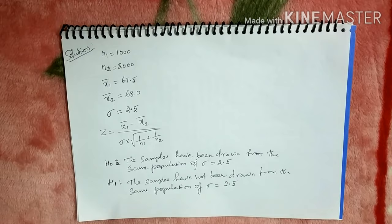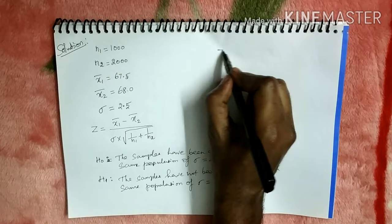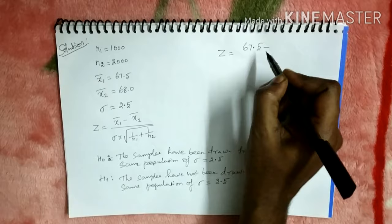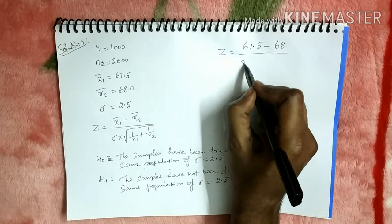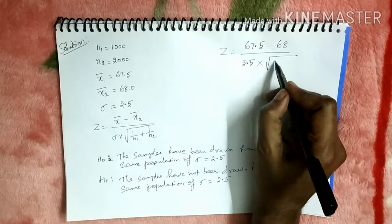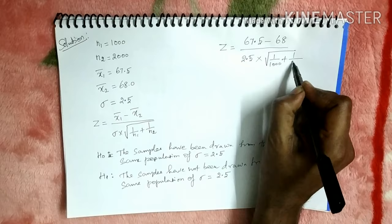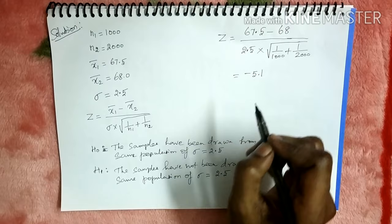Now substitute the given values in the formula. Z equals 67.5 minus 68, divided by 2.5 times square root of 1 by 1000 plus 1 by 2000. We take the modulus of this value and get 5.1.